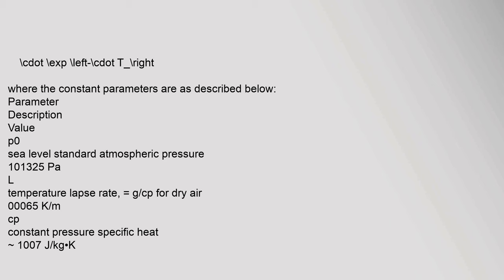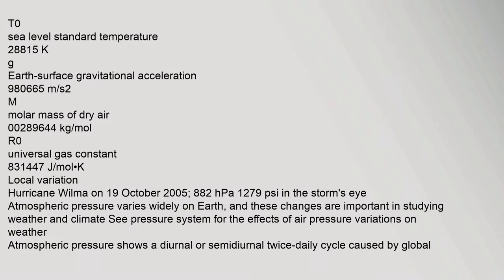Key parameters: P0 — Sea Level Standard Atmospheric Pressure: 101,325 Pa. L — Temperature Lapse Rate, equals G divided by Cp for dry air: 0.0065 K per meter. Cp — Constant Pressure Specific Heat: 1007 J per kg·K. T0 — Sea Level Standard Temperature: 288.15 K. g — Earth Surface Gravitational Acceleration: 9.80665 m/s².